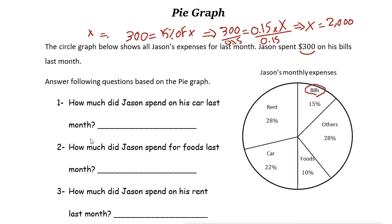Now we can easily solve these problems. It says how much did Jason spend on his car last month. So car is 22 percent of $2,000. So just write the equation for this one. So it is 22 percent.